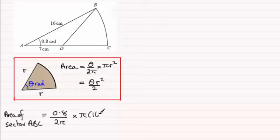So you've got π times 16 squared. Those π's cancel and you end up with that formula there. So working this out you end up with 102.4 centimetre squared. So that's the area of the sector.